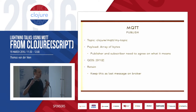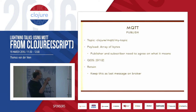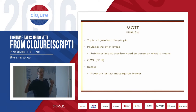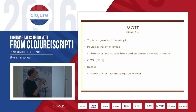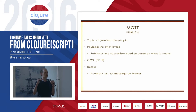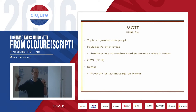MQTT is very simple — there are about 15 commands. For publish, you include a topic; for instance, the topic might be something like 'clojure/mqtt/my-topic' — that's just a string. The payload is just an array of bytes. MQTT doesn't specify what the payload is — you decide. That could be a string, that could be an EDN structure, just about anything.